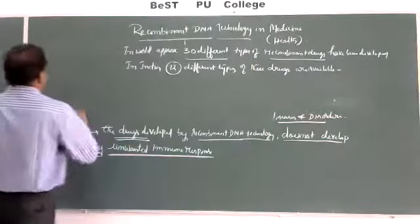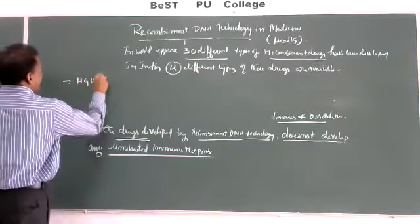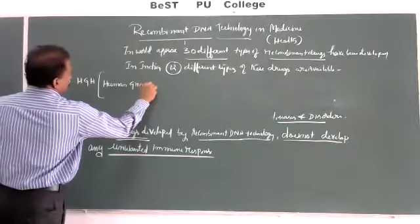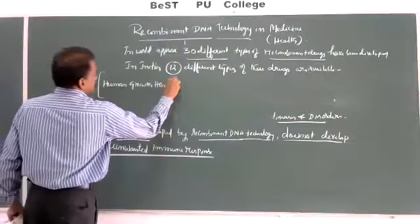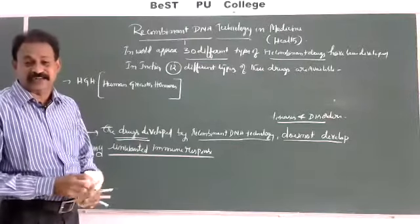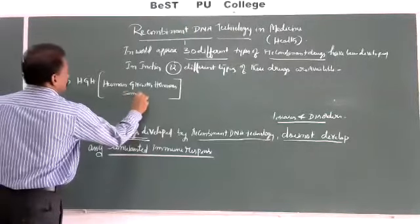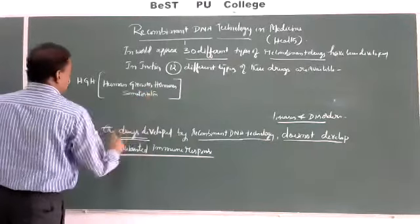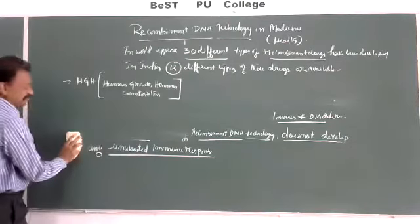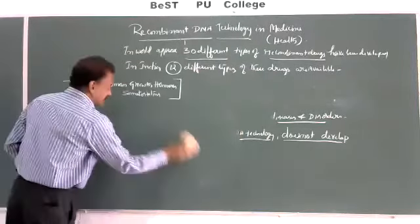For example, very few — human growth hormones, called human somatostatins — are responsible for increasing the height of shorter human beings. The drugs developed by recombinant DNA technology do not have any unwanted immune response, any side effects, any reaction, or allergy.